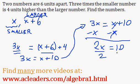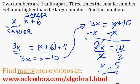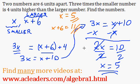Now I can divide both sides by 2, and x is going to be equal to 10 over 2, which is 5. That's the smaller number. Now the larger number is going to be 5 plus 6, so 11. So our numbers are 5 and 11, the final answer.